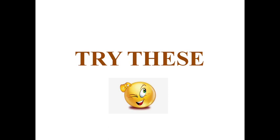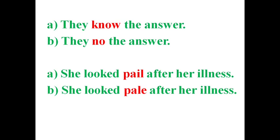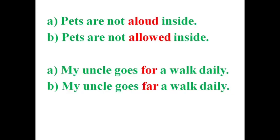Now we can try some practice. Choose the sentence that is correct in meaning: 'We can't hear your voice.' 'The colour of your hair is black.' 'They know the answer.' 'She looked pale after her illness.' 'Pets are not allowed inside.' 'My uncle goes for a walk daily.'